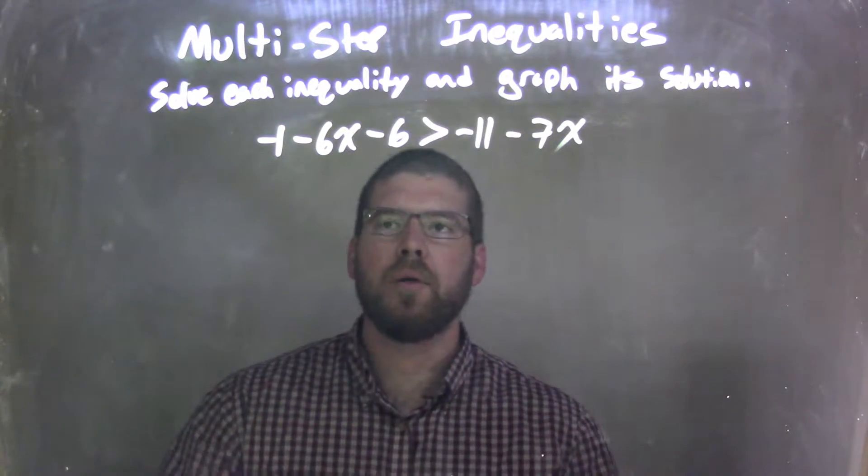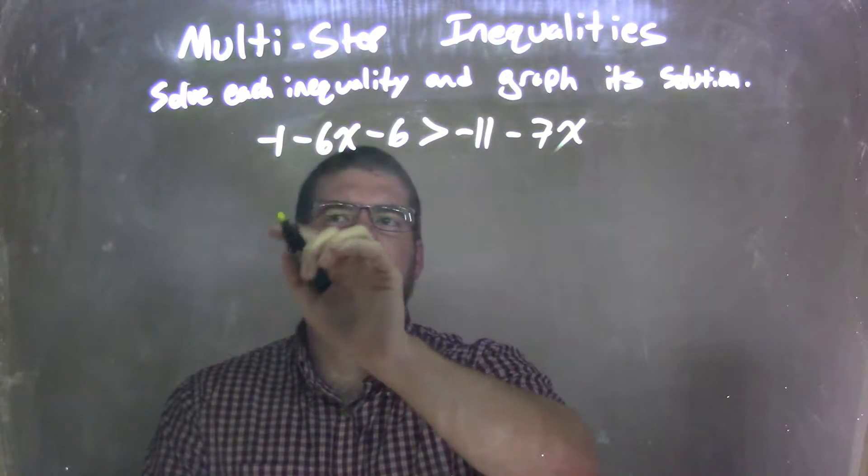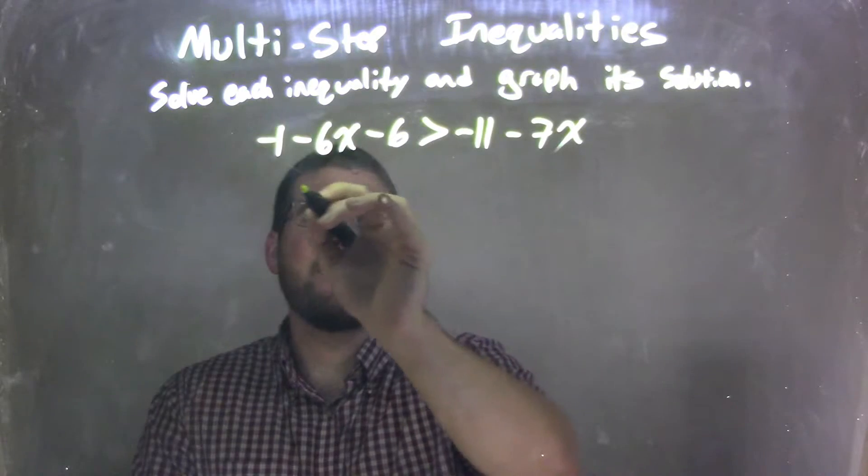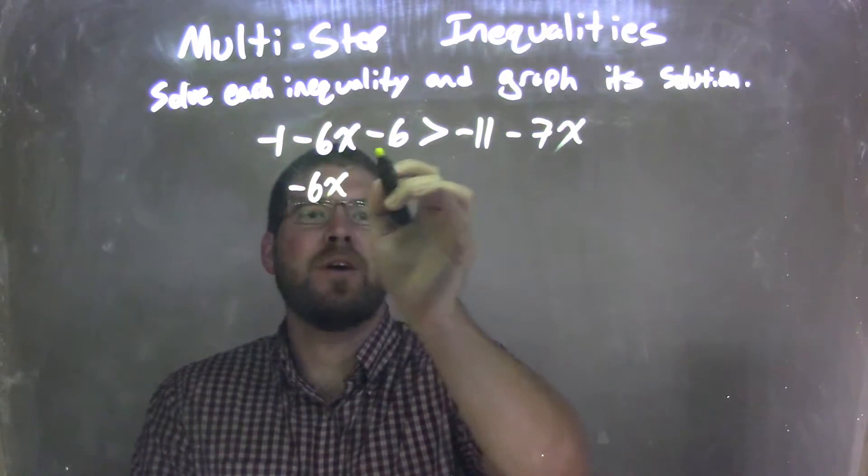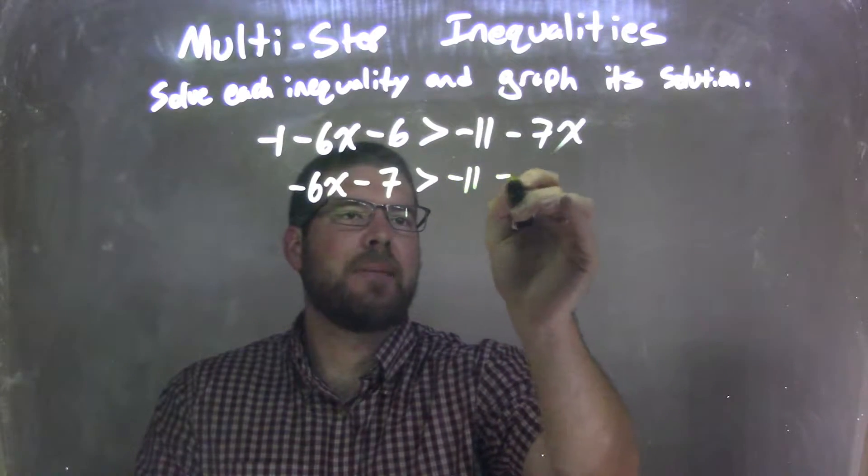Okay, well from there, what I can do is combine our like terms on each side. So I have the negative 1 and minus the 6 there. So that's going to give me, I'm going to put the negative 6 up front, negative 1 minus the 6 is negative 7, negative 6x is greater than negative 11 minus 7x.